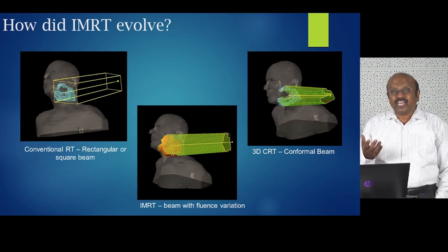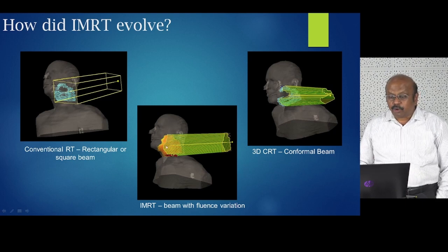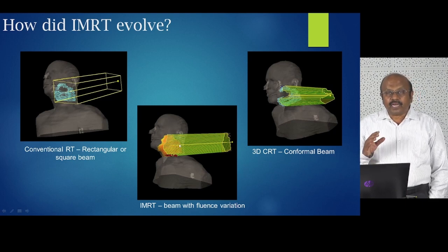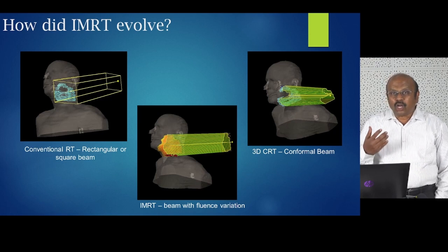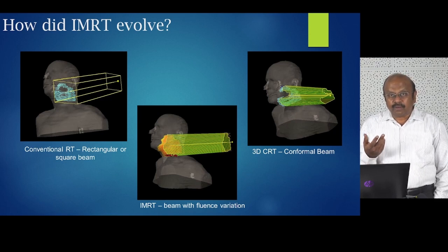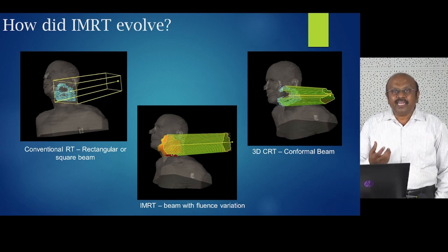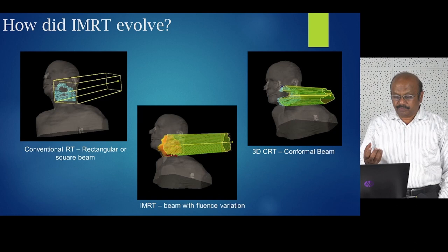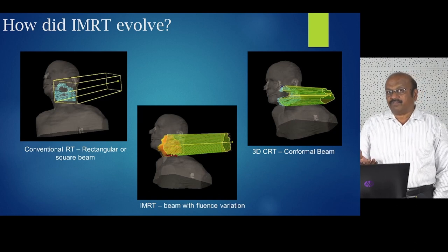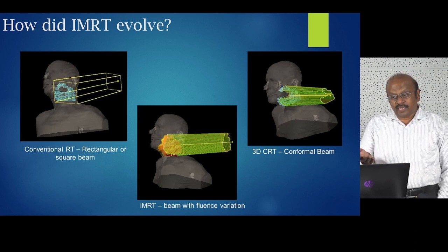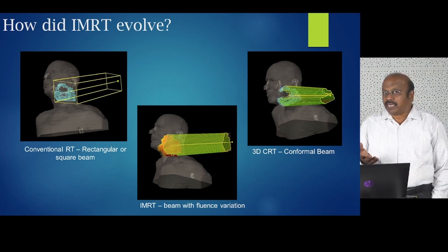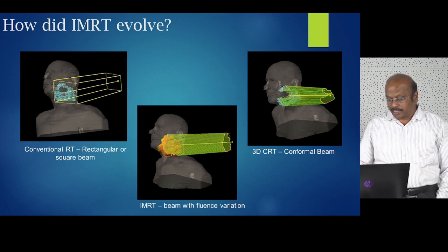However, with 3D conformal we gave a uniform dose within that shape. In intensity modulated radiotherapy, we were able to bring non-uniform dose fluence to get a dose distribution that is highly conformal to the tumor. That is where IMRT is different. IMRT could be delivered either with the MLC or conformal blocks, but nowadays we mostly use multi-leaf collimator.